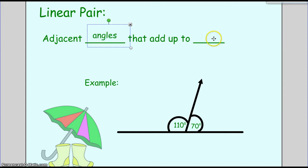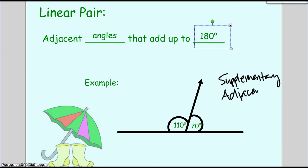Linear pairs are adjacent angles that add up to 180 degrees. Now remember, if two angles add up to 180, then they are supplementary. And if they are sitting next to each other and they're touching, then they are adjacent. So these are two key words that I should think of when I think of a linear pair.